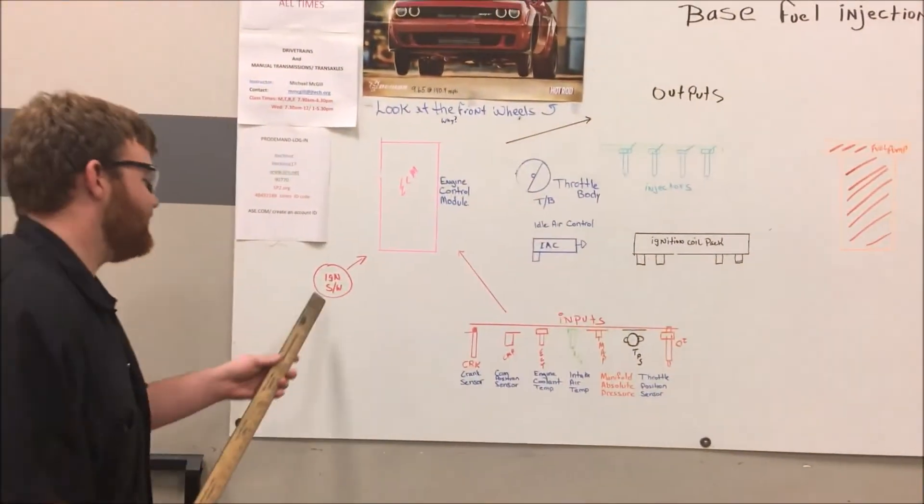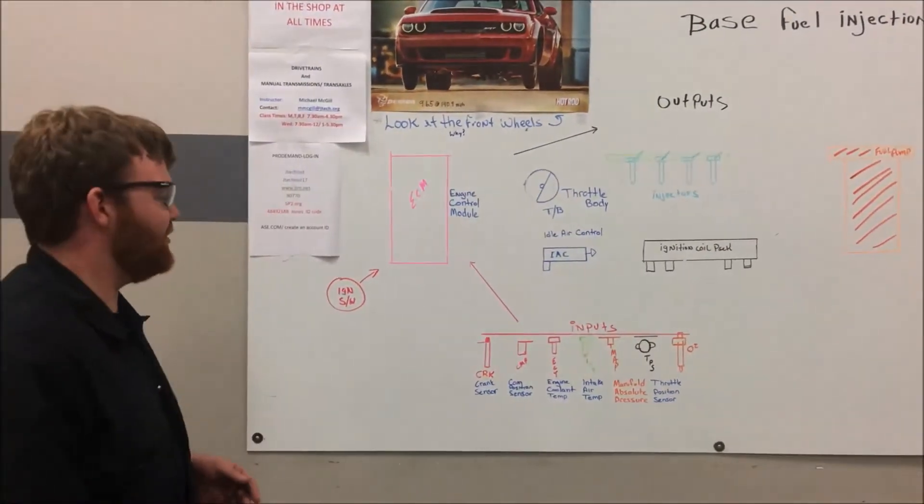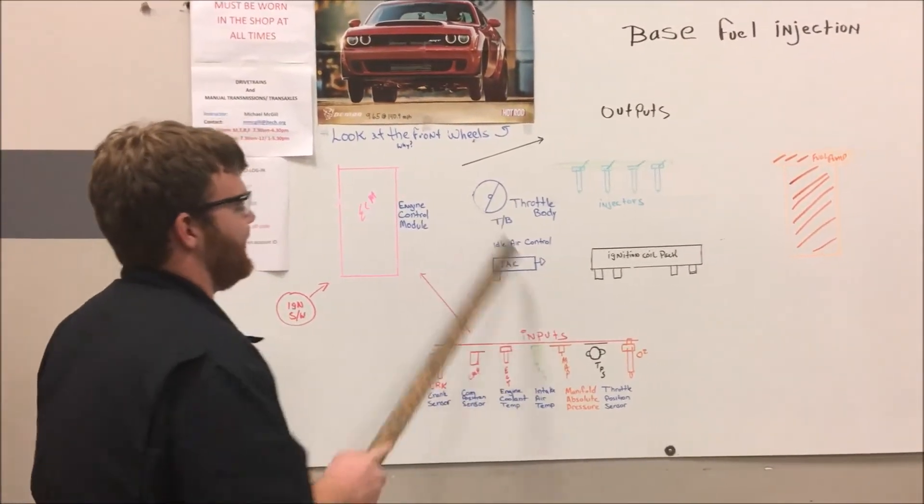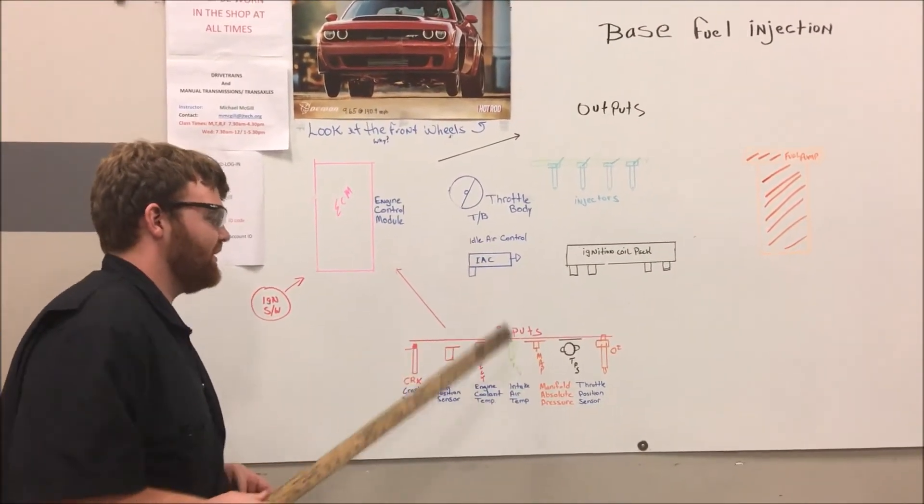And we actuate this with our ignition switch. We turn this on, all the inputs go to the ECM and it starts the engine. So we got the throttle body.